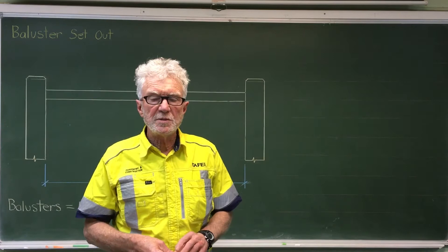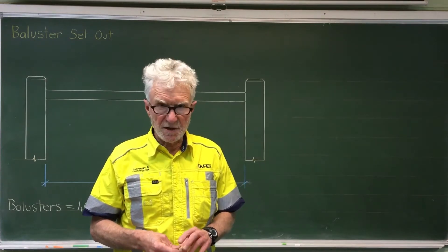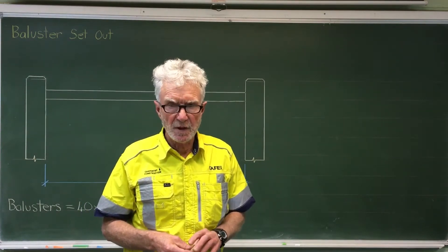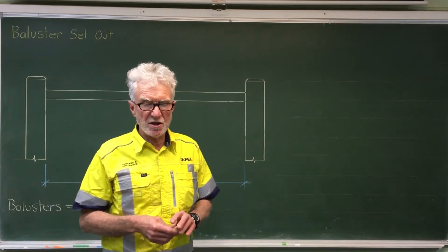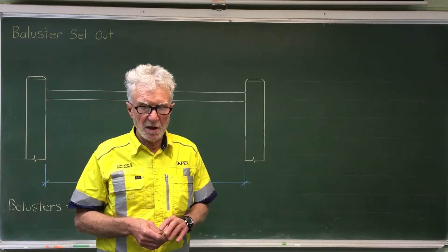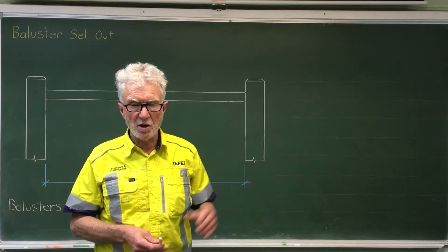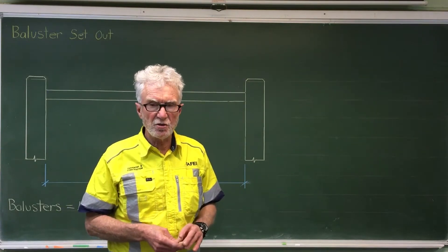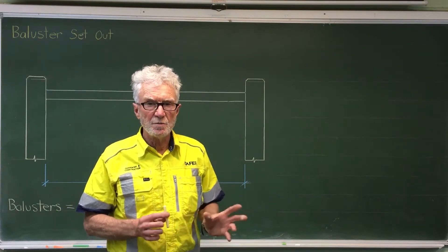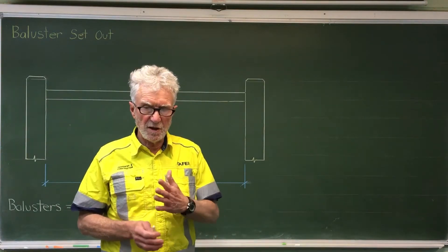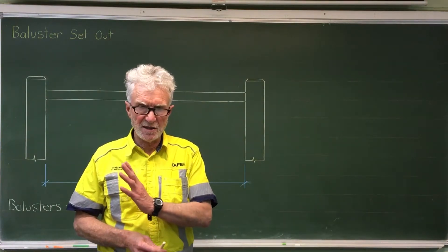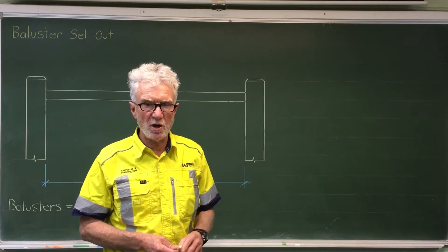So students, we're up to the stage where we've got to be able to work out the set out of our balusters. Now setting out balusters on a set of stairs requires the balusters to run vertically up the side of the stairs between the stringer and the handrail. But before we can do that we need to think about how we set out the balusters in a horizontal situation.